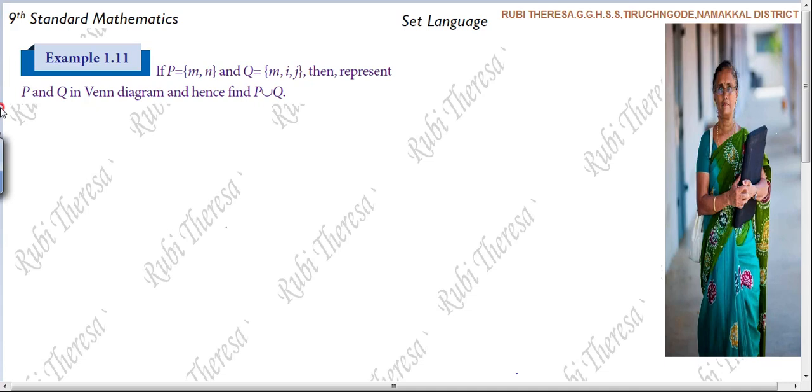Actually, what they have given, example 1.11. If P equal to M, N and Q equal to M, I, N, J, then represent P and Q in Venn diagram. Represent P and Q in Venn diagram and hence find P union Q.